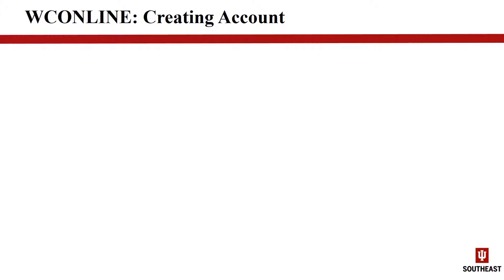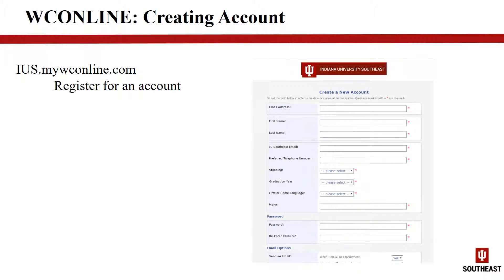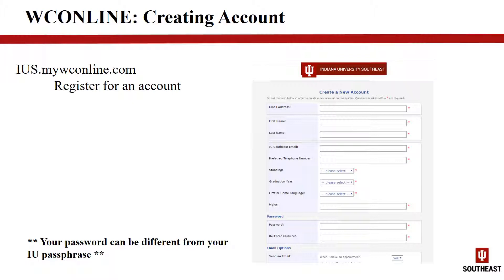The first step in making appointments with the Writing Center is to create an account on WCOnline. To access this website, go to ius.mywconline.com. On the homepage, you can click the link that says Register for an Account on the left. Fill out the information to the best of your knowledge. It's okay to put undecided major or your expected graduation year, even if you aren't sure. While you don't have to use your IU email address, it is recommended. You can choose any password you'd like. If you forget your password, you can change it online or come into the Writing Center and we can help you reset it.